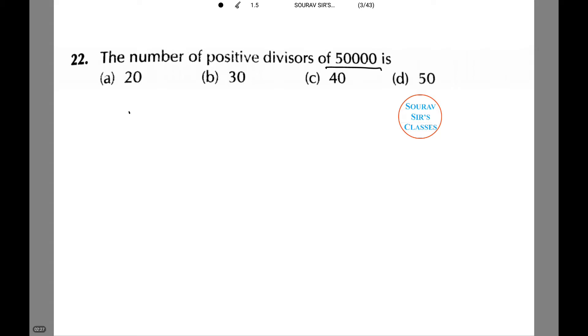We need to find the total number of positive divisors of 50,000. We have number of positive divisors of 50,000 which equals 2 to the power 4 times 5 to the power 5. This we have obtained by doing LCM.